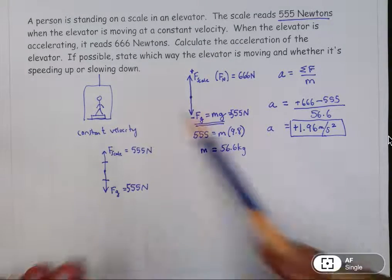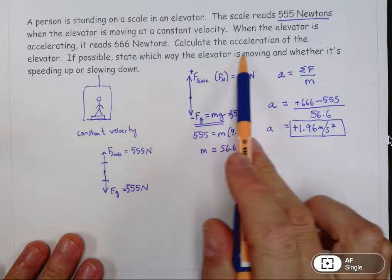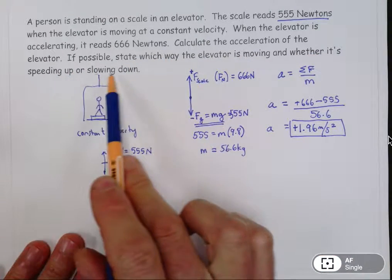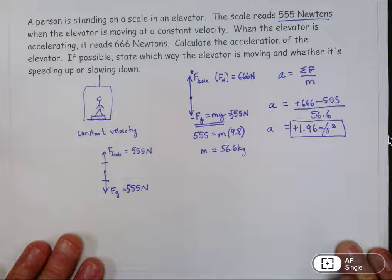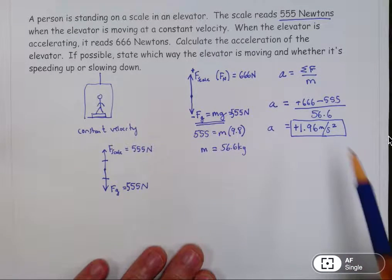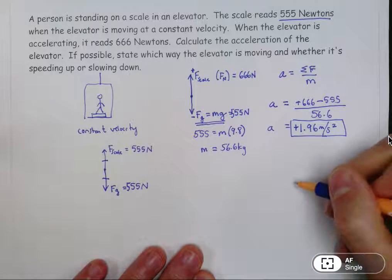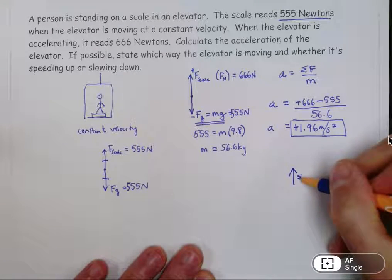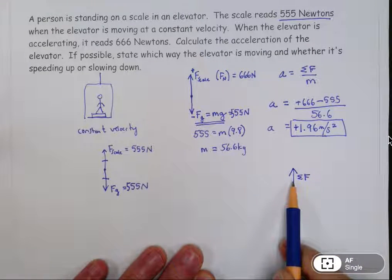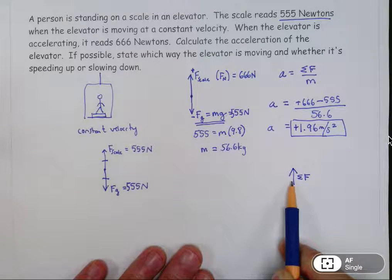Now, the other question here is, if possible, state which way the elevator is moving and whether it's speeding up or slowing down. Well, what we know is that the acceleration is positive. And remember, acceleration always points in the same direction as the net force. So we know that the net force is positive. And really, that's all we know.